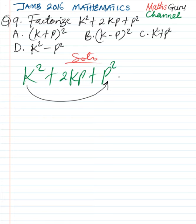So k square times p square will give us k square p square. And then you take the term at the middle and it's going to be positive 2kp.